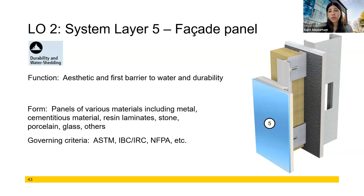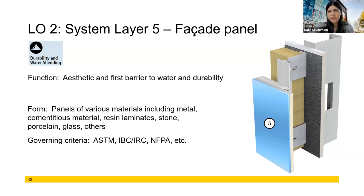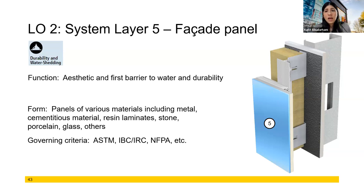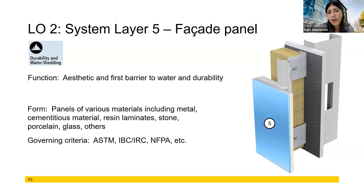Your last system layer is going to be your facade panel. It should be highly durable, aesthetically pleasing, and meet your design intent. There are a lot of different ways to clad the building: we've got metal, cementitious panels like fiber cement, HPL, natural stone, masonry, porcelain glass, and plaster. There's a lot of different ways to do this, so you want to ensure you're ticking both the performance and aesthetic boxes.